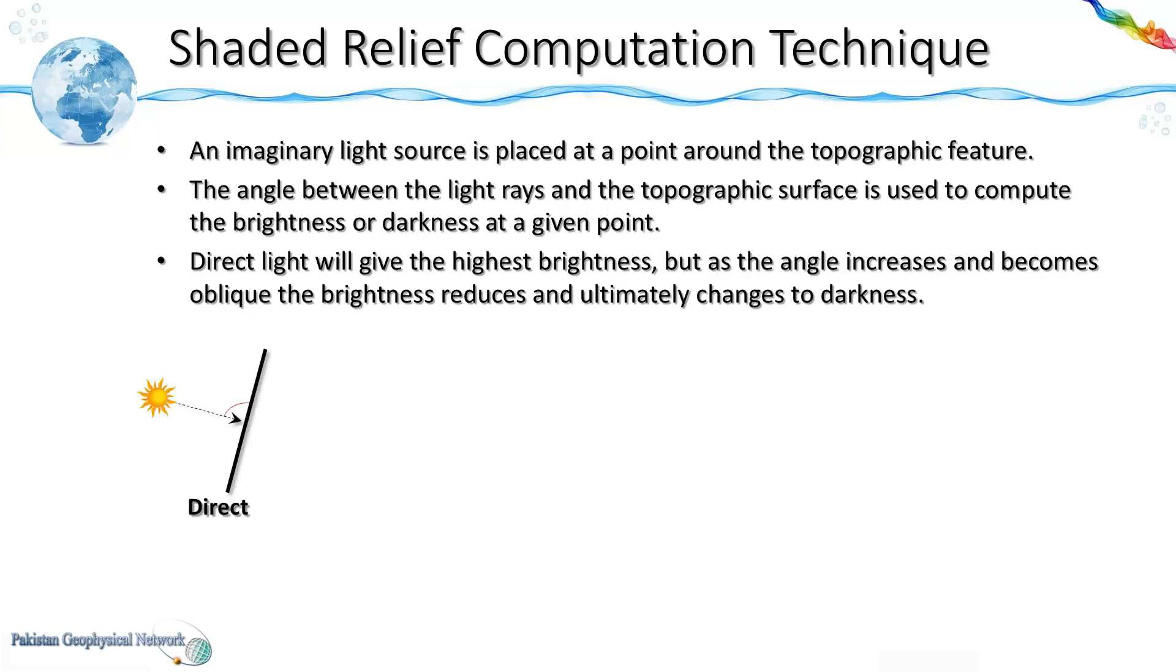In this case light rays hit directly at the surface at 90 degrees and therefore give maximum brightness. But as the slope of the structure reduces light would hit at an oblique angle and therefore brightness would be reduced. And as the structure becomes flat we would get minimum brightness.